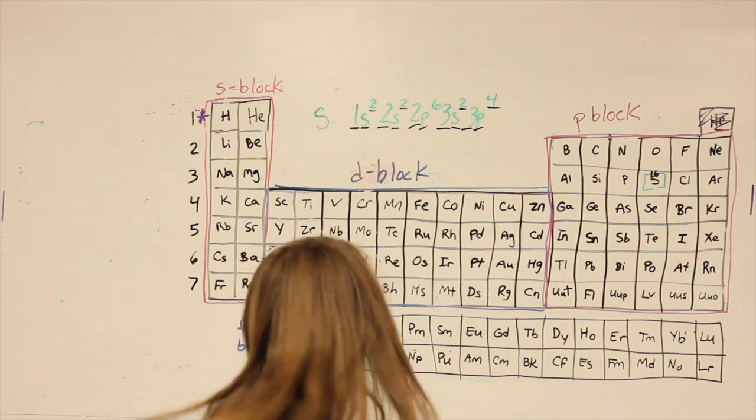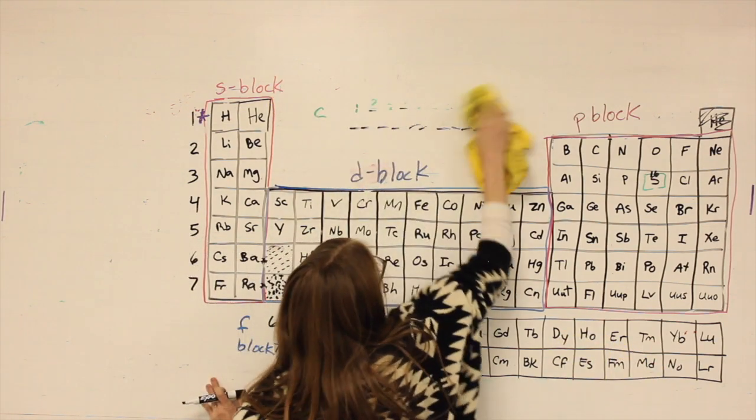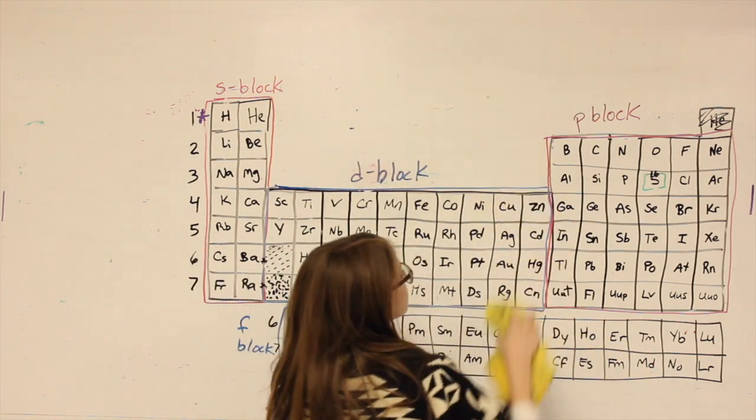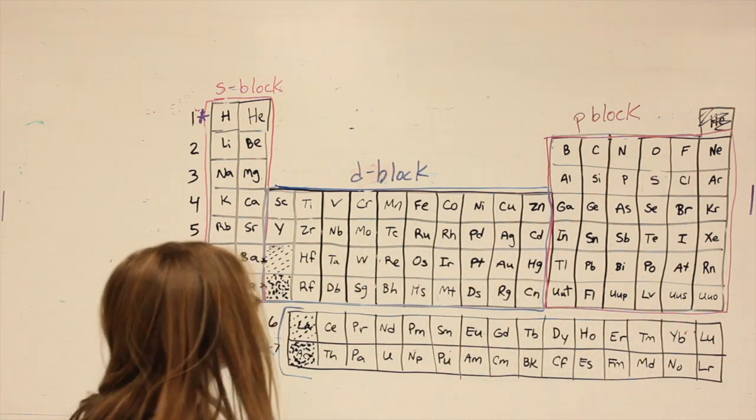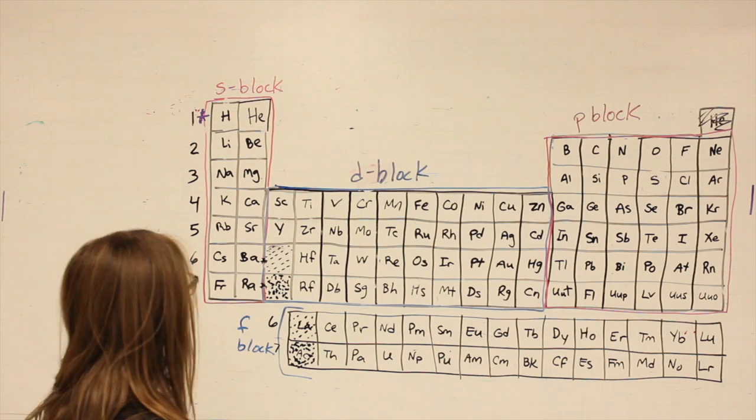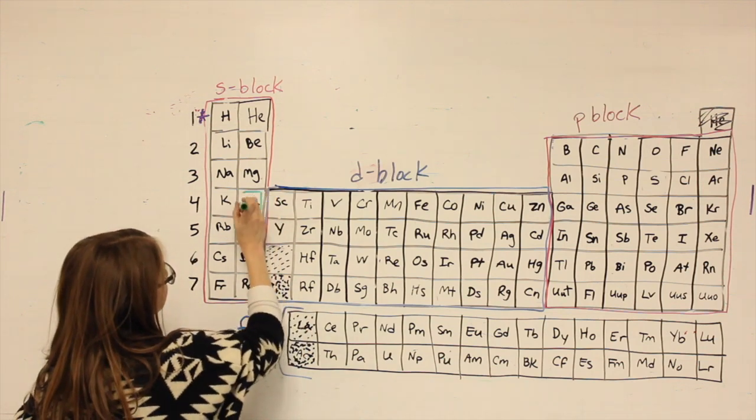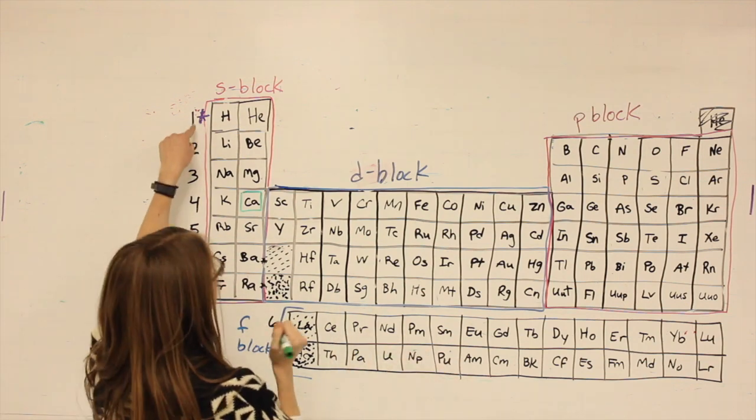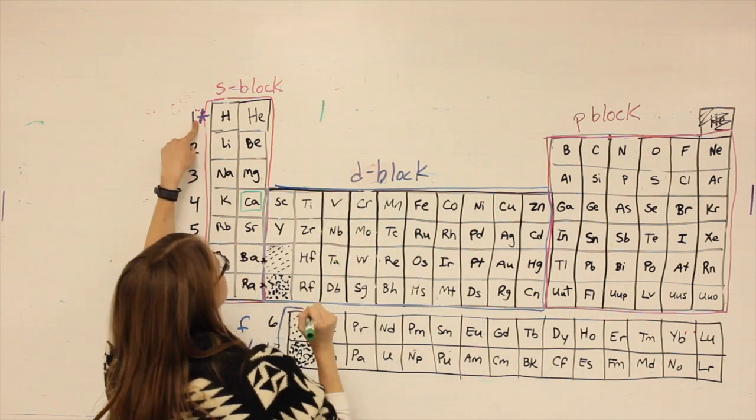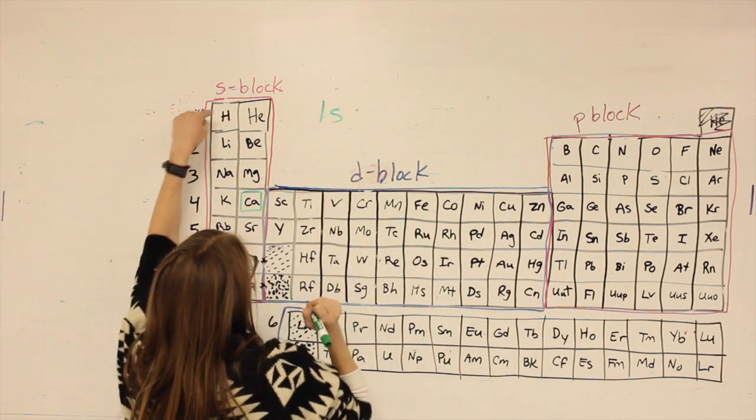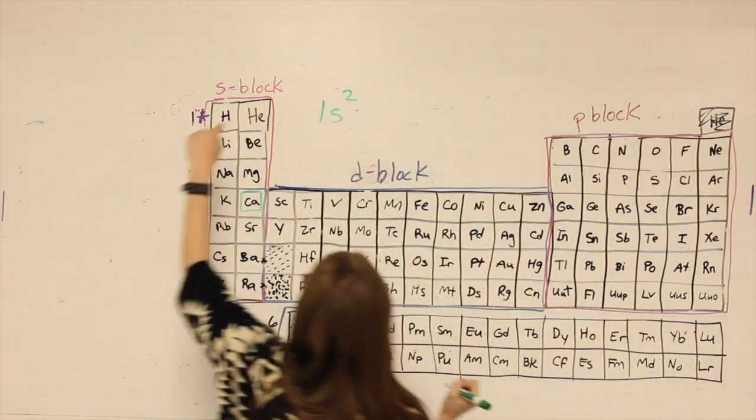Let me show you one more example. Instead of sulfur, let's look at calcium. So starting at the beginning, ask myself what row? One. What letter? S. How many spaces? Two. Nothing else in that row. Now I'm here.